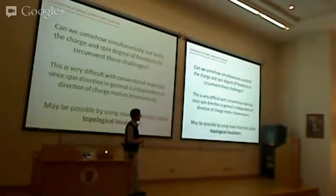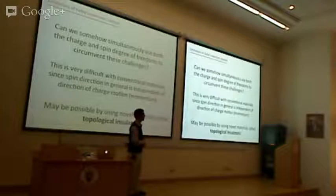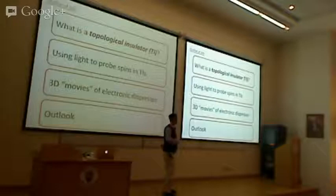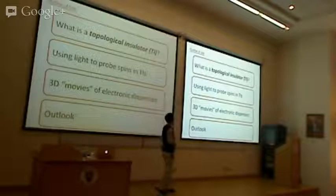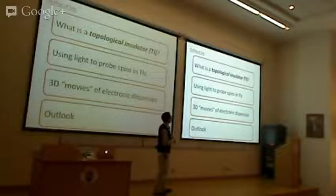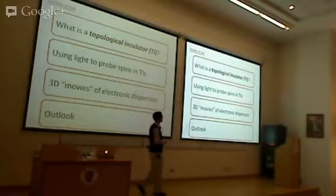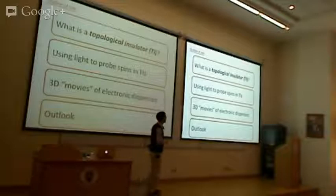The outline of my talk: first, I'll explain what a topological insulator is and what's topological about it. Then I'll tell you two experiments — first, how we mapped the spin texture using light pulses, and second, three-dimensional movies of electronic dispersion in topological insulators. Then I'll tell you what we've learned and where we're going.